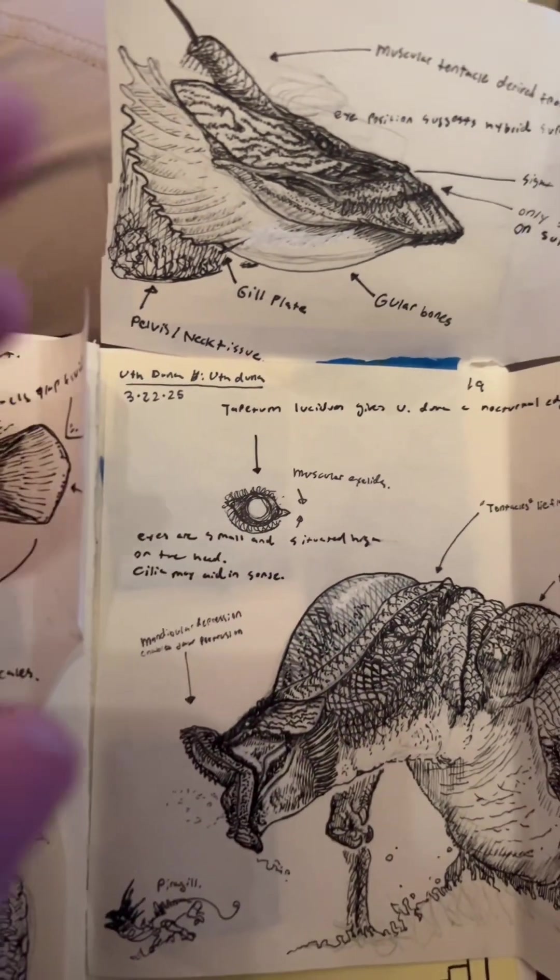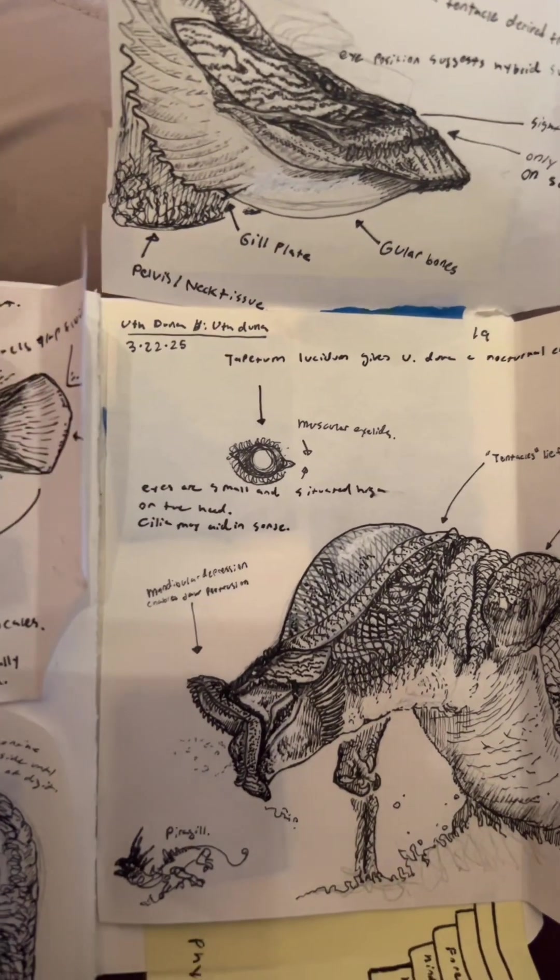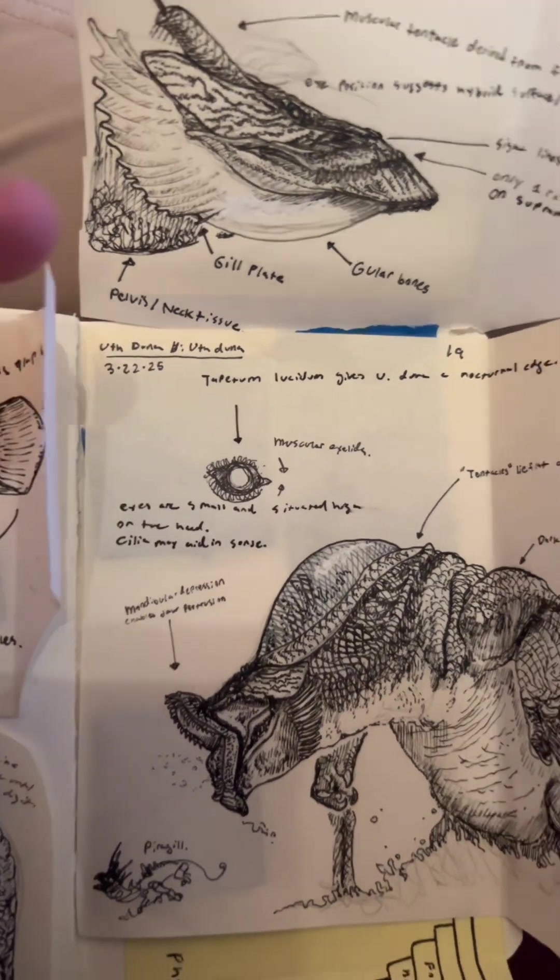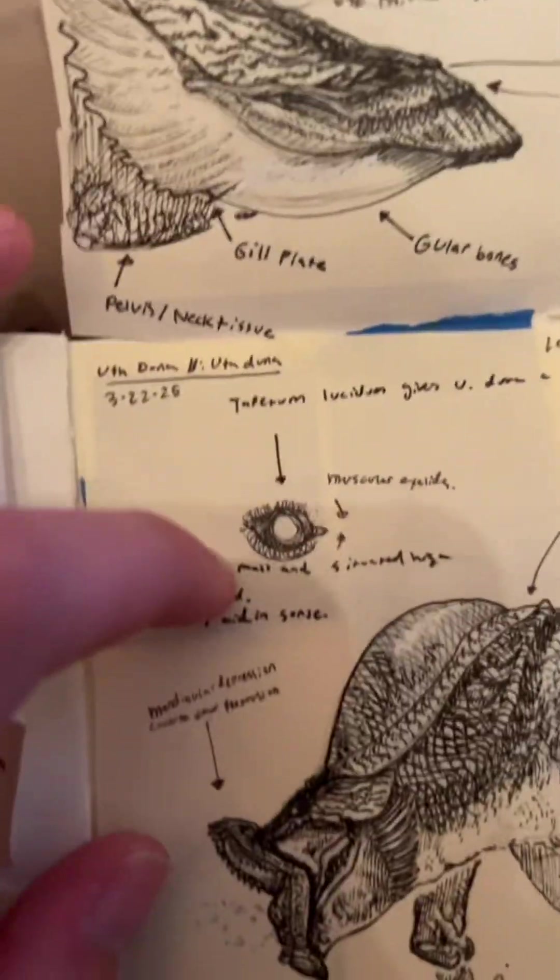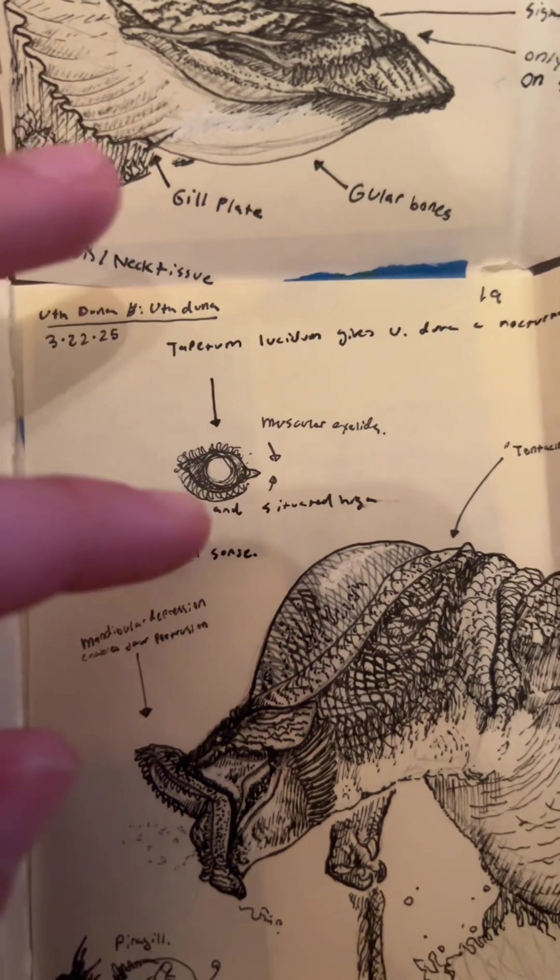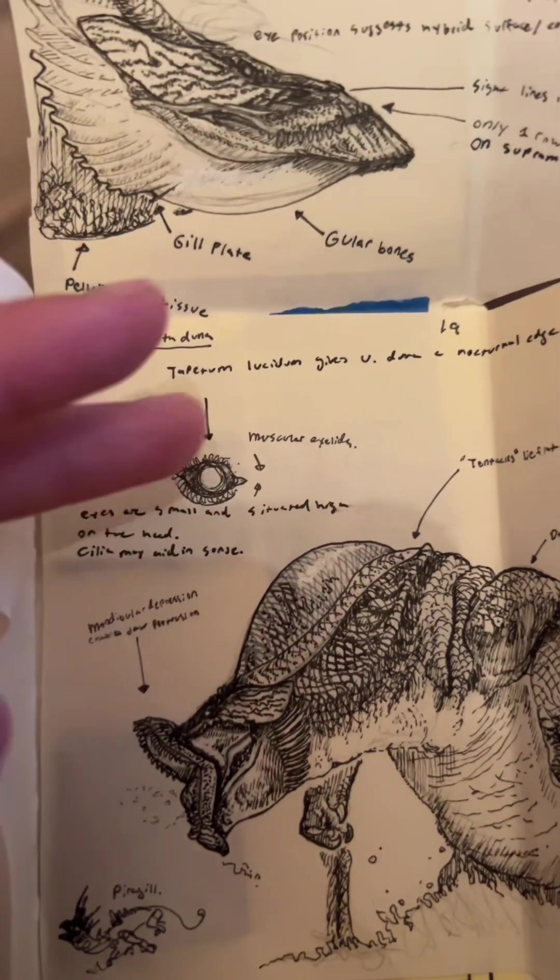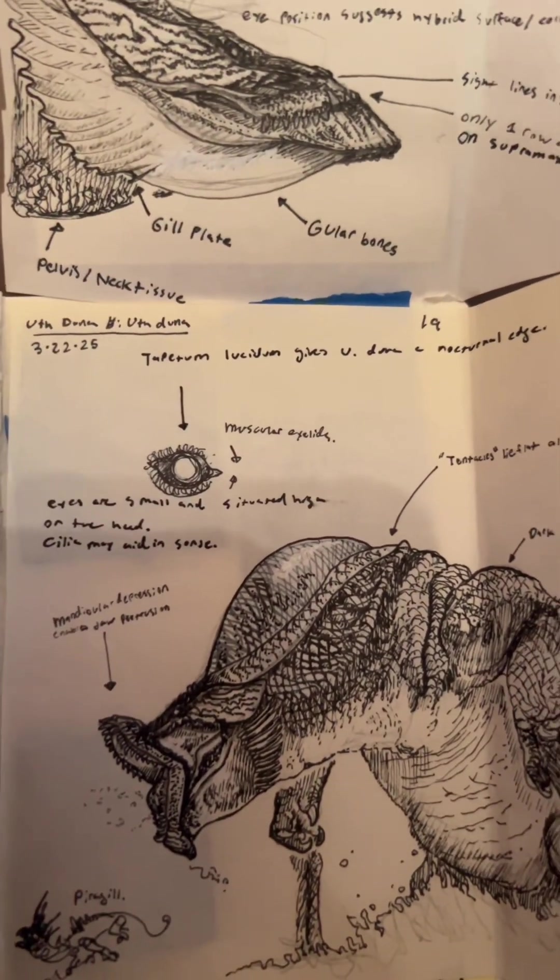Another thing about Uthduna's eyes is that they're somewhat specialized for nocturnal vision. They have a tapetum lucidum. They glow in the dark, just like a lot of the animals do. Also, they have these funky muscular eyelids that can close over the eye.